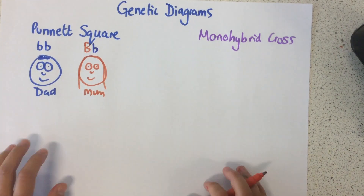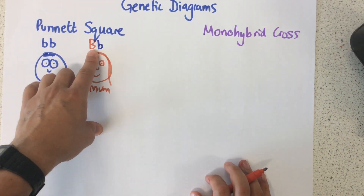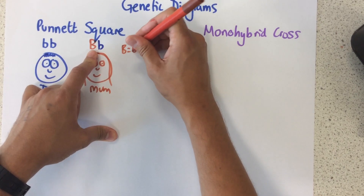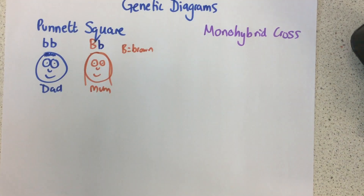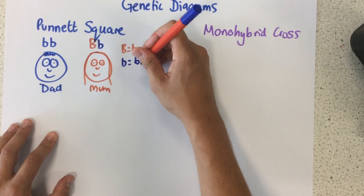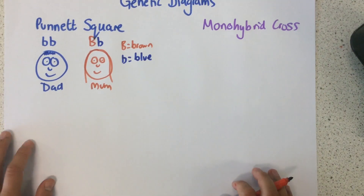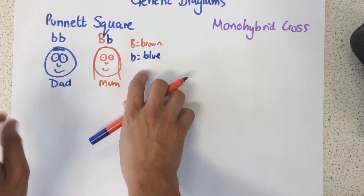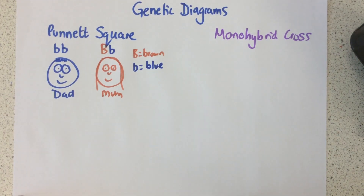Just a reminder about what this means. The big B, the capital B, is the gene for brown eyes, and it is dominant. You can tell it's dominant because it's a capital letter. And there's the little b, which stands for blue eyes. Remember, if it's recessive, we need two of those particular alleles in order to have that characteristic.